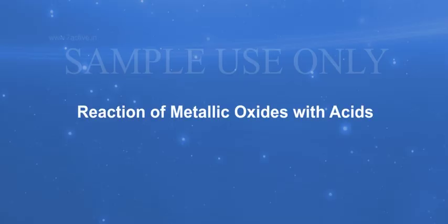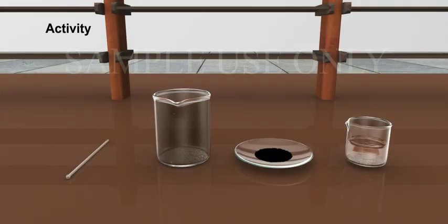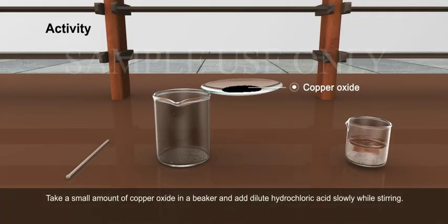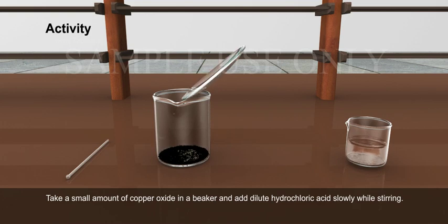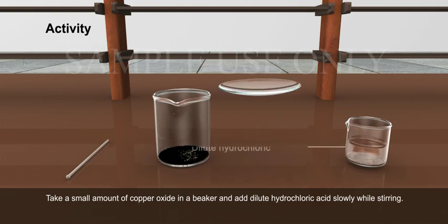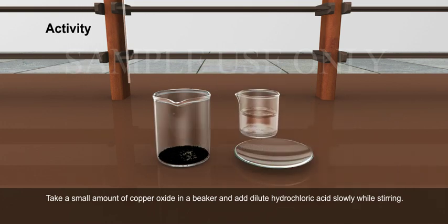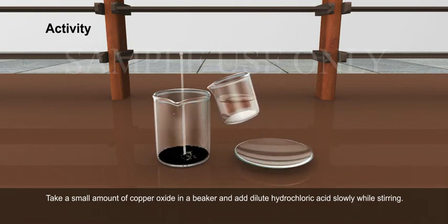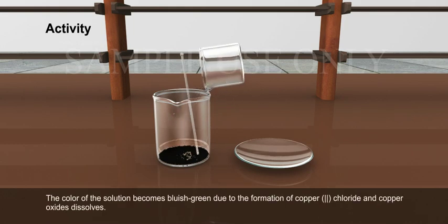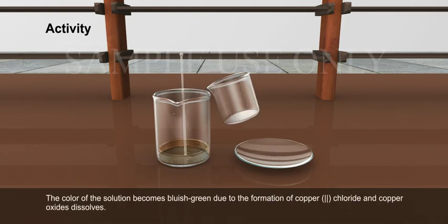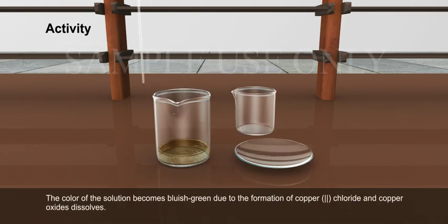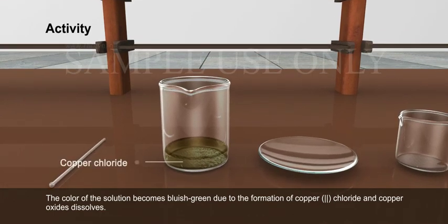Reaction of Metallic Oxides with Acids Activity: Take a small amount of copper oxide in a beaker and add dilute hydrochloric acid slowly while stirring. The colour of the solution becomes bluish green due to the formation of copper chloride, and copper oxide dissolves.